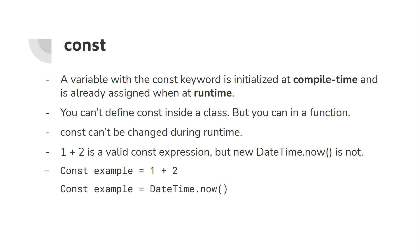What is the difference between const and final? Const is a variable that is initialized at compile time and is already assigned at runtime. Compile time is when your code is translated into machine code — zeros and ones — and runtime is when your code is actually running line by line. At compile time, the program must know the value of the variable.